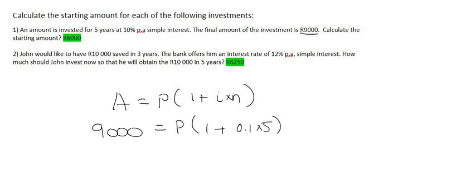The point now is to get P by itself. Because there's a multiplication between P and this bracket, you take the bracket to the left-hand side by dividing. What you end up with is something that looks like this.